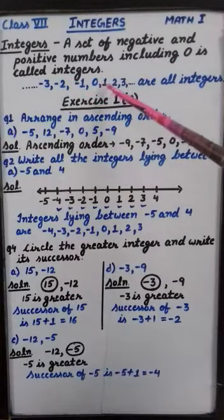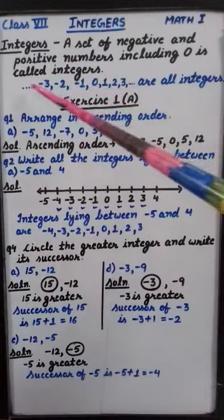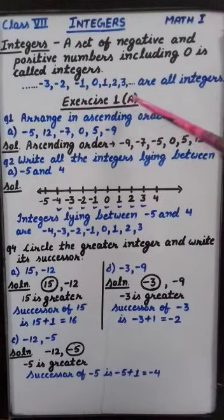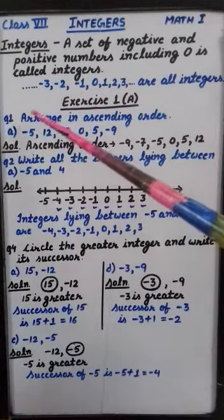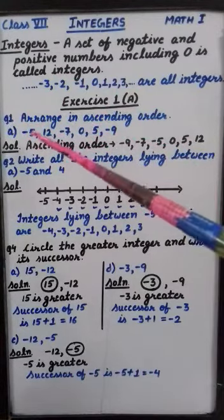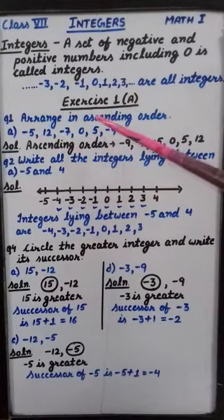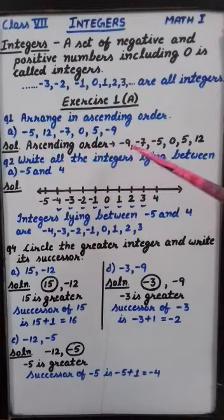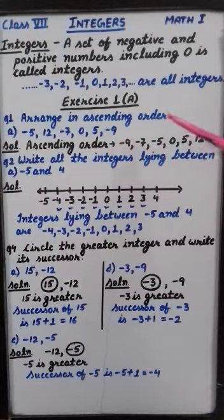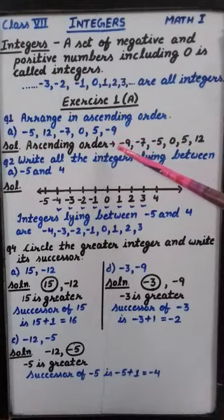And remember this that all the positive numbers as well as 0, they all are greater than the negative numbers. Now let's begin with exercise 1a. First question. Arrange in ascending order. Now these are the numbers here. Minus 5, 12, minus 7, 0, 5 and minus 9. Now whenever we are writing the numbers in ascending order, we have to move from smaller to greater. And as we know that negative numbers, they are always smaller. So let's begin.